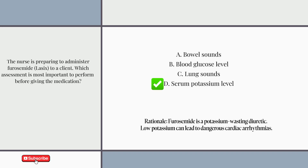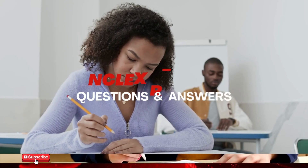Answer: D. Serum potassium level. Furosemide is a potassium-wasting diuretic. Low potassium can lead to dangerous cardiac arrhythmias.